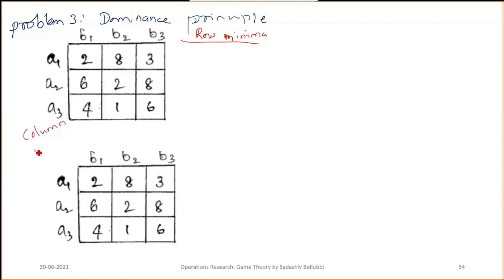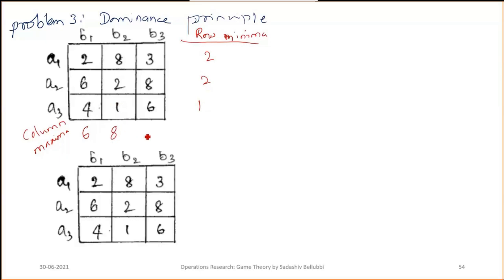Depending on that, we can delete the columns and rows. To find the saddle point, first identify the row minima: 2, 2, and 1, and for the column maxima: 6, 8, and 8.